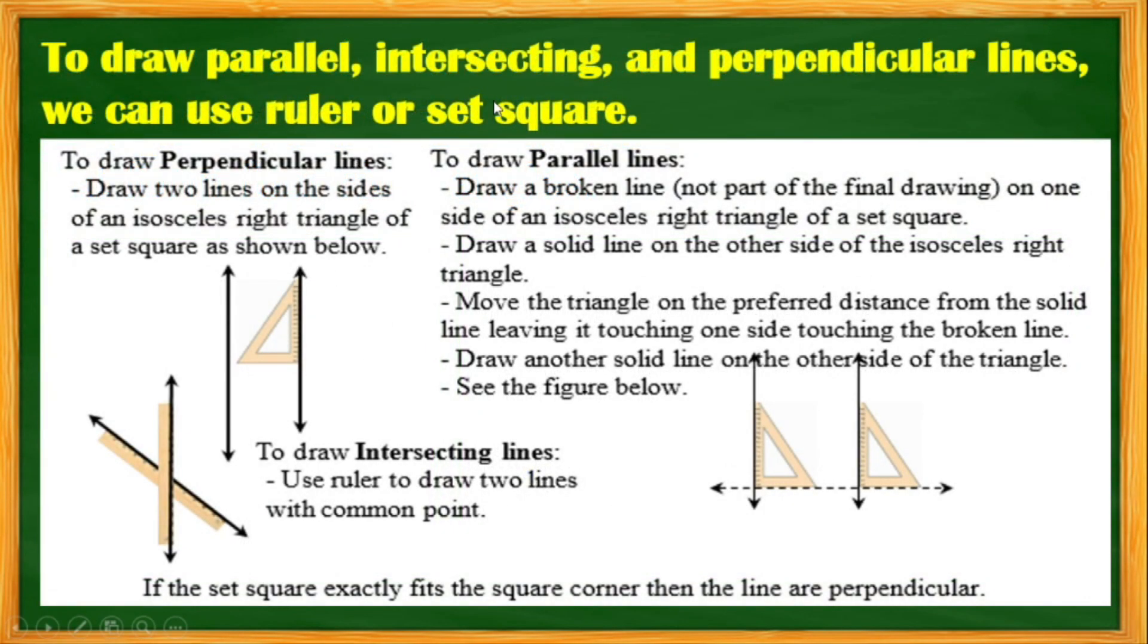To draw parallel, intersecting, and perpendicular lines, we can use a ruler or a set square. To draw a perpendicular line, you need two lines of the side of the isosceles right triangle of a set square as shown below. We have two lines using the set square.